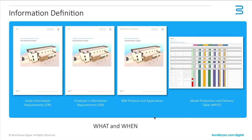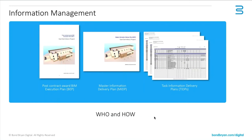Typically, a project may have a series of documents from the client defining what information is required and when that information is required. From a COBie perspective, that's largely the asset information requirements — the detail of the information required in order to deliver COBie. That document is quite a critical piece in order to ultimately hand over the information the client requires. Only once you've got that can you then start to put in place your plans to deliver the information, which would be a BIM execution plan, master information delivery plan, and so on. You can of course deliver COBie without that information, but that's ideally how BIM Level 2 is designed to work.